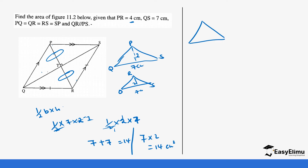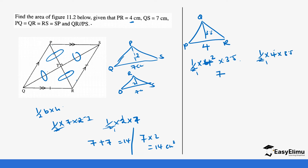Alternatively, you can split the rhombus the other way, taking triangles with vertex Q and P. Now the base becomes 4 centimeters and the height becomes 7 ÷ 2 = 3.5. Each triangle gives ½ × 4 × 3.5 = 7, and both triangles together give 7 + 7 = 14 centimeters squared — the same result. You can choose either method.